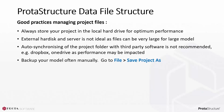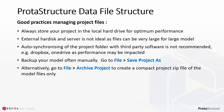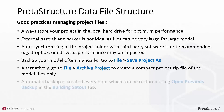Backup your model often manually. Go to File > Save Project As and simply save it as another name. Alternatively, go to File > Archive Project to create a compact project zip file of the model files only. Automatic backup is also created every hour, which can be restored using the Open Previous Backup function in the Building Setout tab.